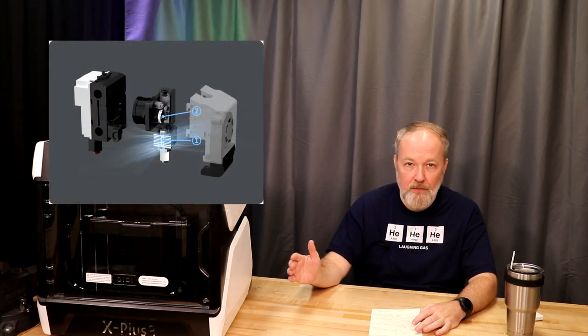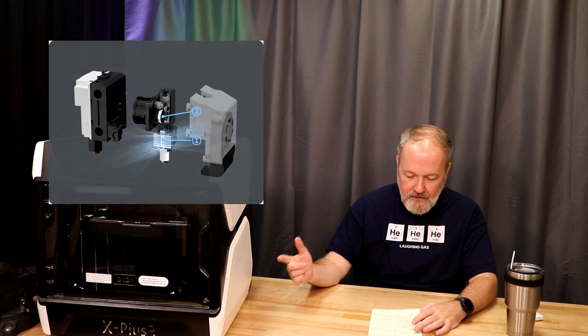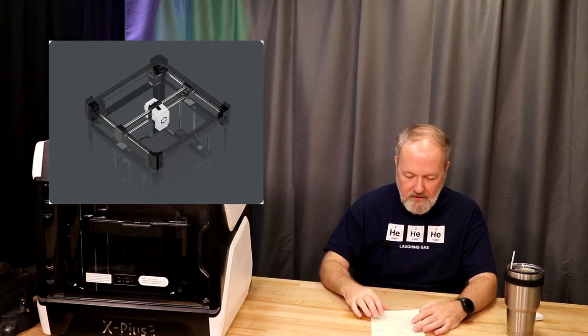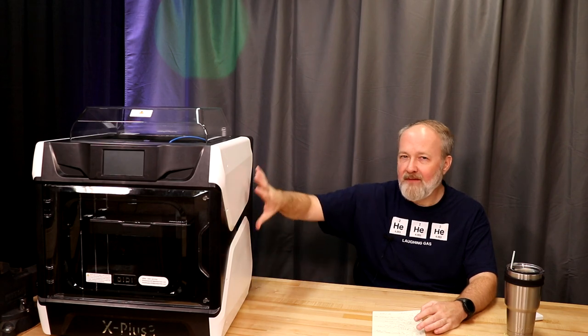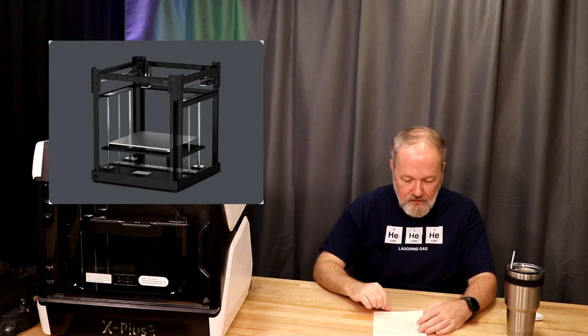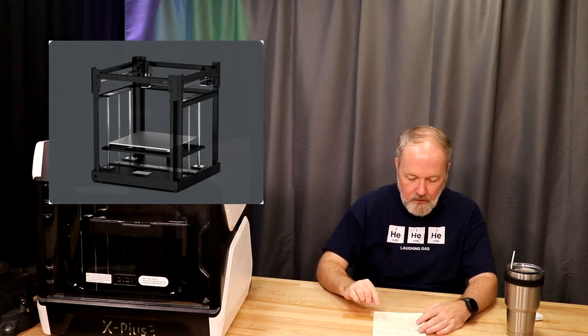This has a high flow hot end. So 35 millimeters cubed per second. So it's really chunking the plastic out. I mentioned before, this is a Core XY. This is running Klipper firmware, and this has a 32, 64 bit processor in it. So very quick machine. Even though this is wrapped in plastic, kind of neat looking, kind of futuristic space age looking, it has a metal frame on the inside. And that is one of the differences between this one and the old one.